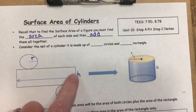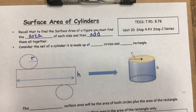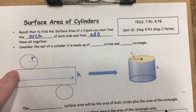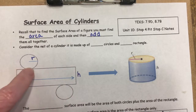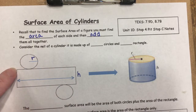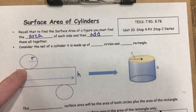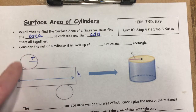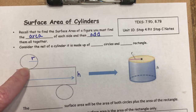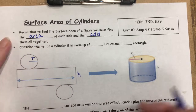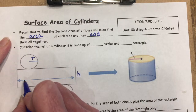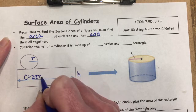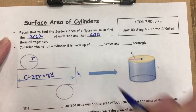Before you cut the cylinder to make a net, the rectangle was wrapped around the circle. So the length of the rectangle is the same as the distance all the way around the circle — that's called the circumference. The circumference equals two times pi times r, or pi times the diameter.